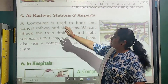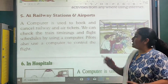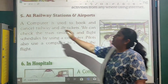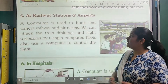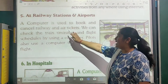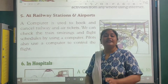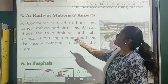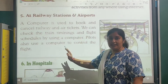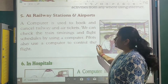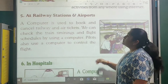The fifth point is that you can use a computer at railway stations and airports. A computer is used to book and cancel railway and air tickets. We can check train timings and flight schedules by using a computer. Pilots also use a computer to control the flight.